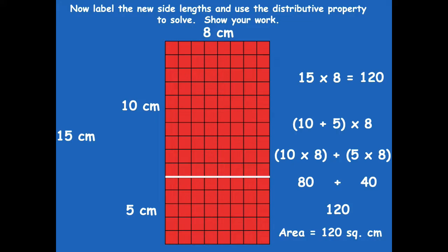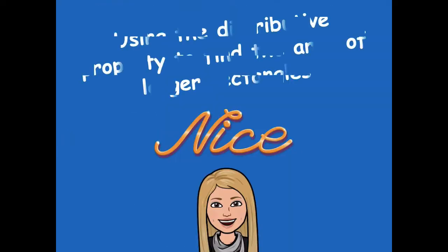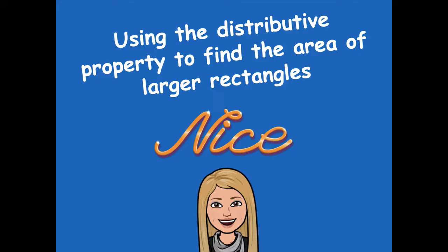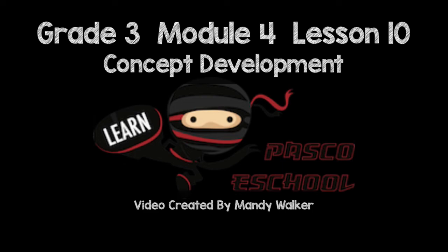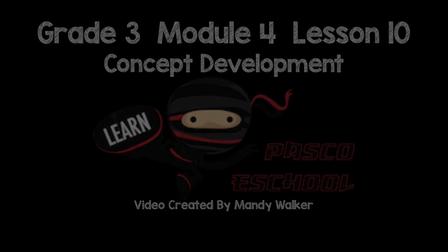The total area for this rectangle is 120 square centimeters. Don't forget to label your unit — since we're measuring in centimeters and finding area, you need to write square centimeters. Nice job using the distributive property to find the area of larger rectangles! Please head back to the module to see what you need to complete for independent practice. If you have any questions, let me know — I'd be happy to help. Have a great rest of your day, bye friends!